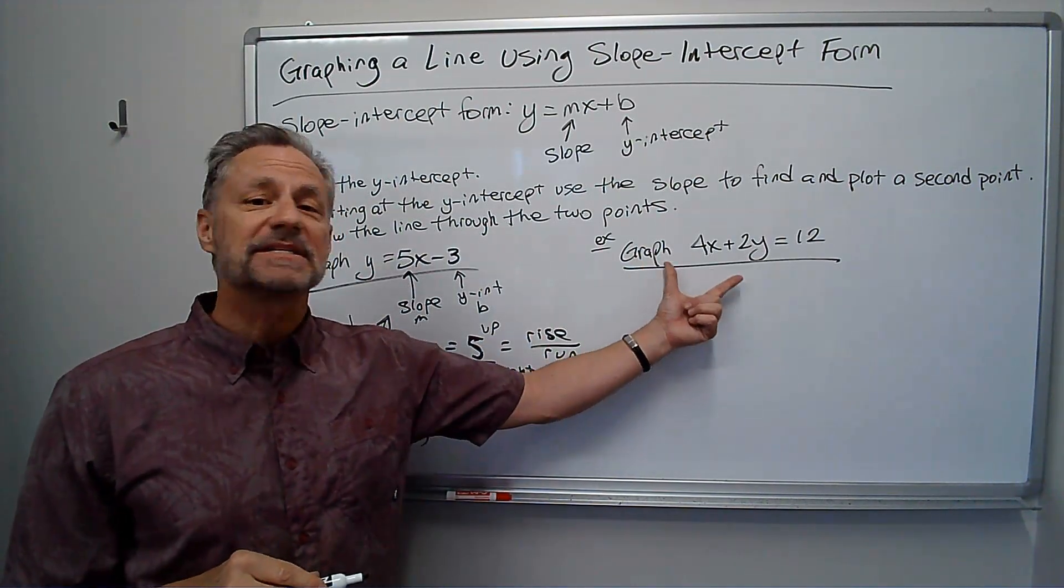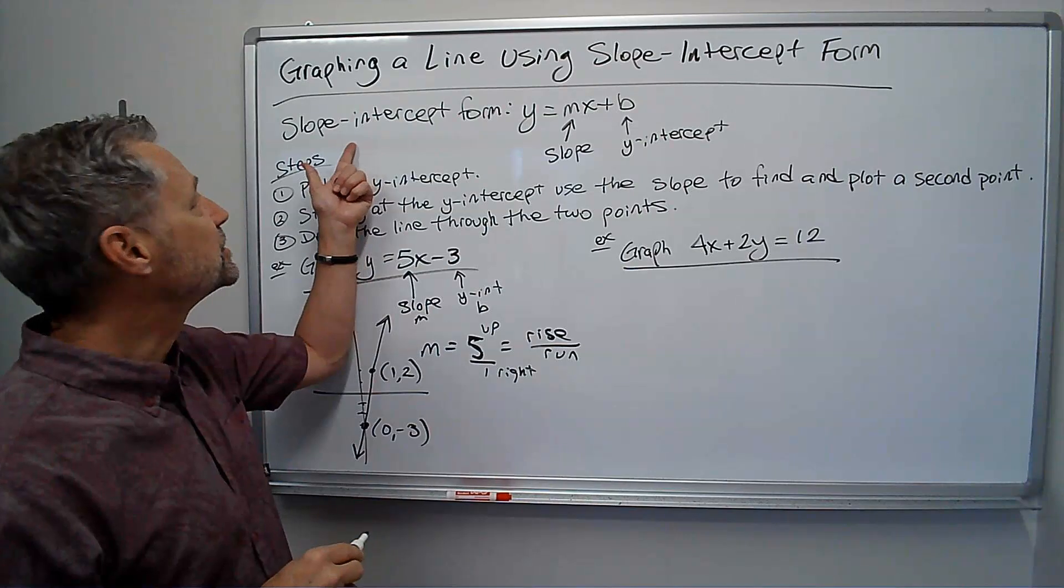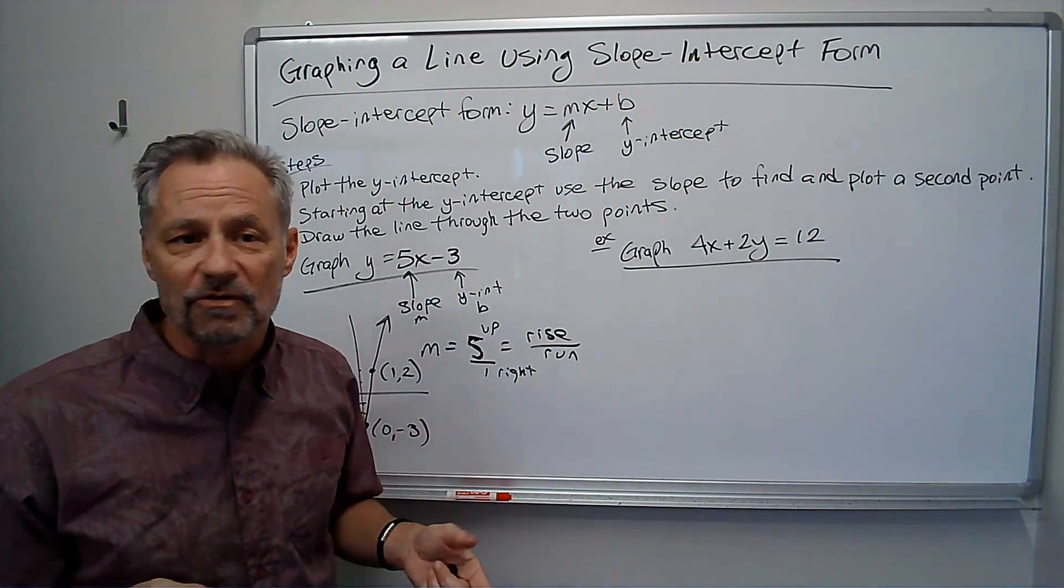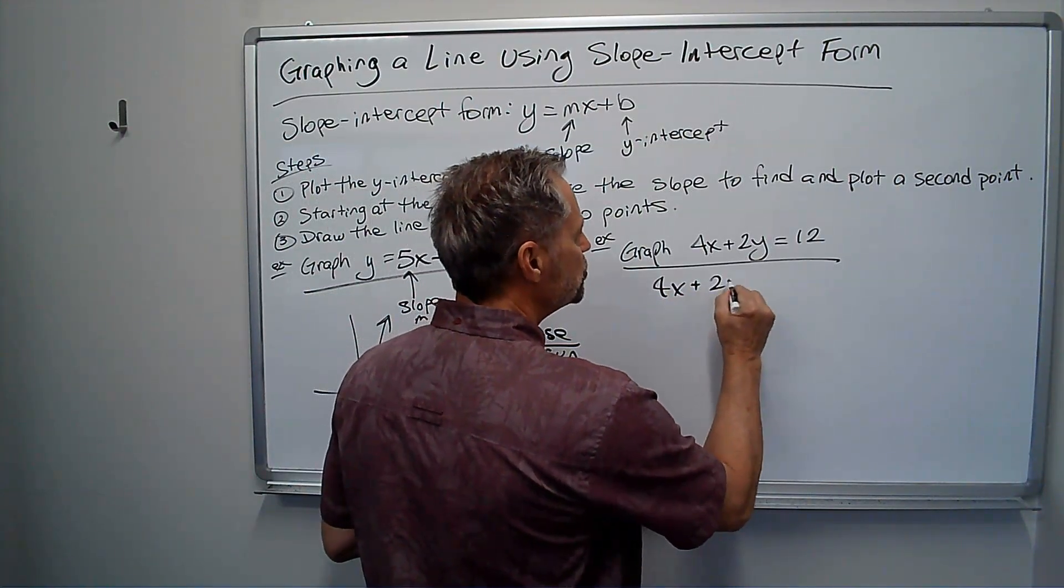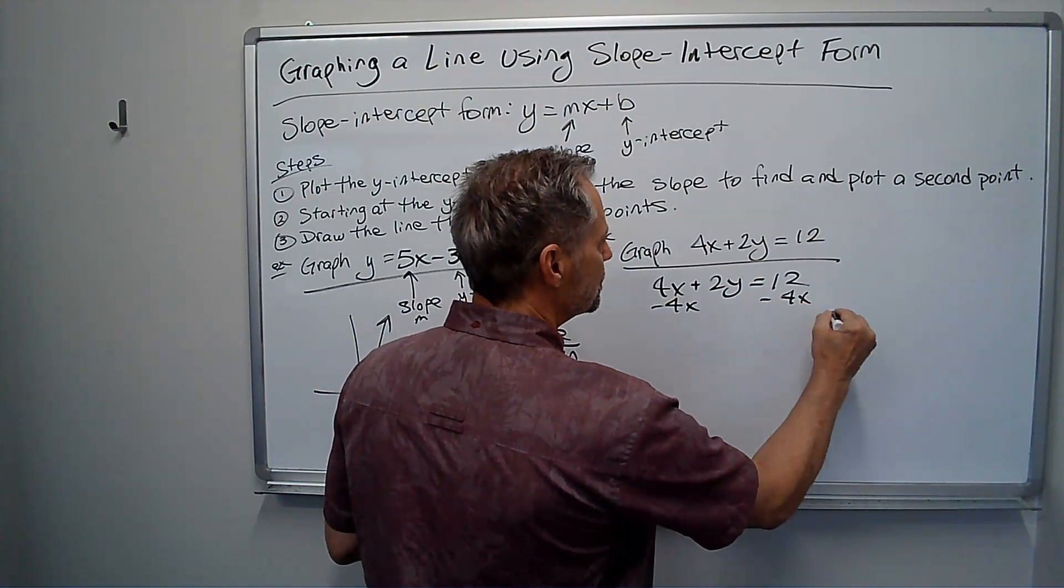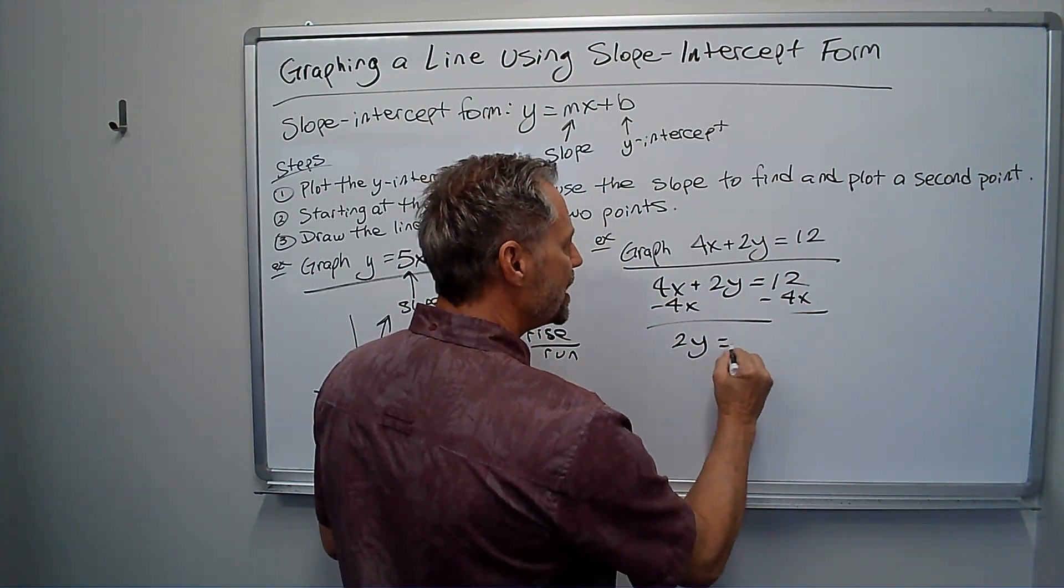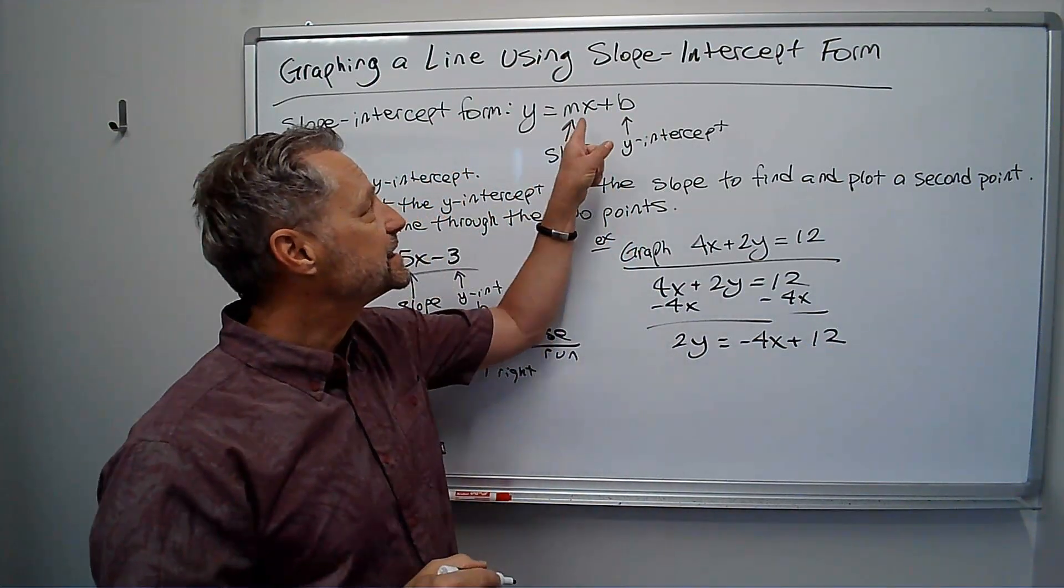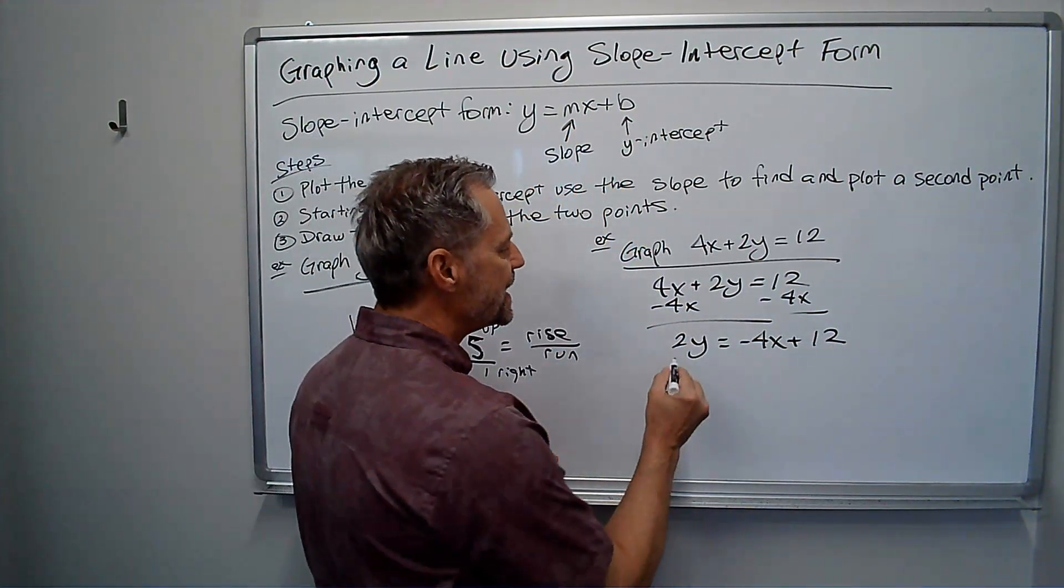Here's another graph. This time it's not in slope-intercept form, so I need to put it in slope-intercept form, meaning I just need to solve for y. So I've got 4x plus 2y is 12. I'm going to subtract the 4x. I get 2y. I like to put the x first so that it's in this order.